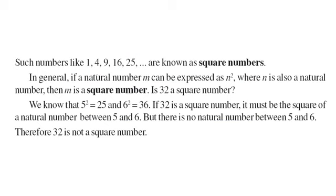So these numbers, all these numbers, are called the square numbers. So let us generalize it. If a natural number m can be expressed as n square, where n is also a natural number, then m is called a square number.